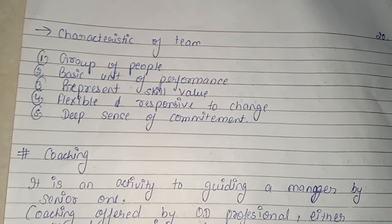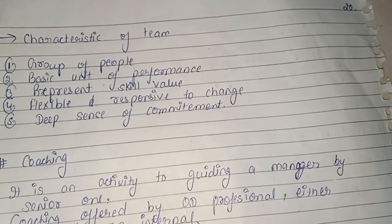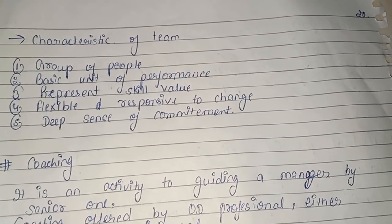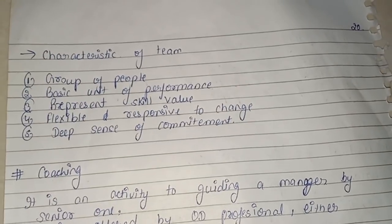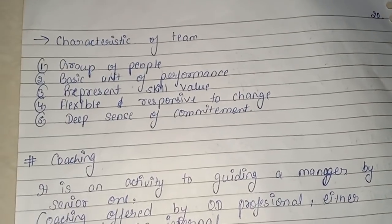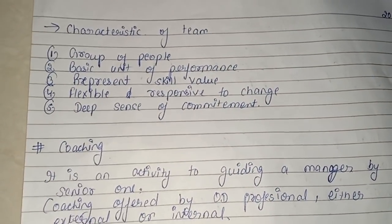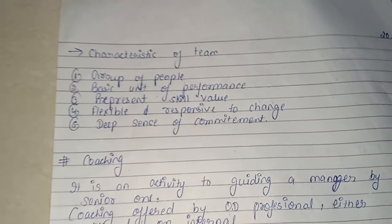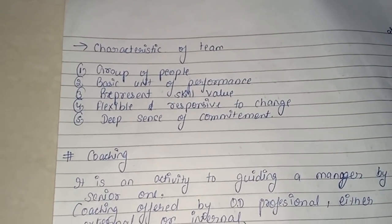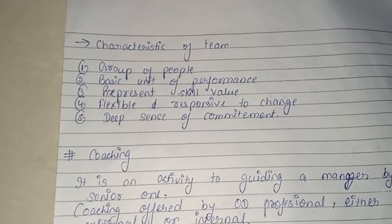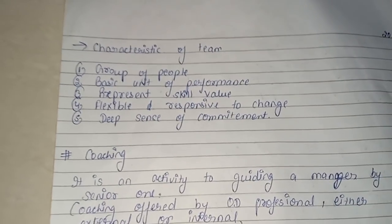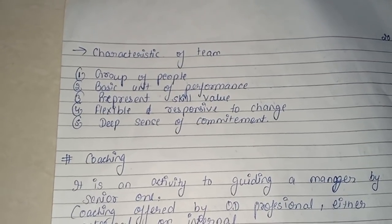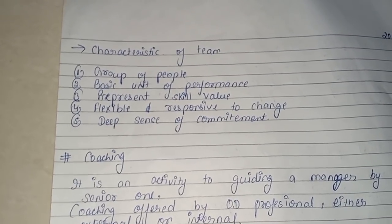The characteristics of a team are: it is a group of people; it is the basic unit of performance — everyone has some performance level; it represents skill and value — every person has some particular skill; flexible and responsive to change — team members should be flexible and responsive, able to respond according to change; and deep sense of commitment — not just saying something but sticking to their words and actually doing it.